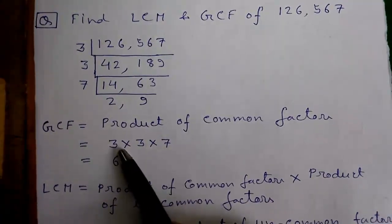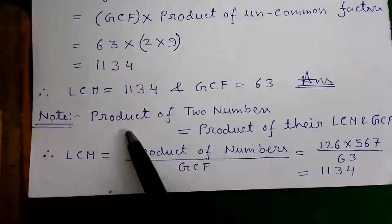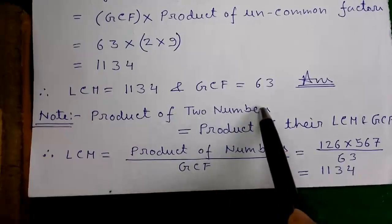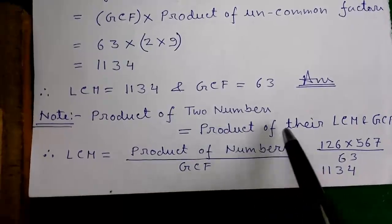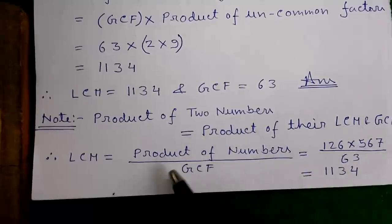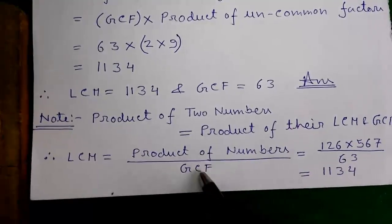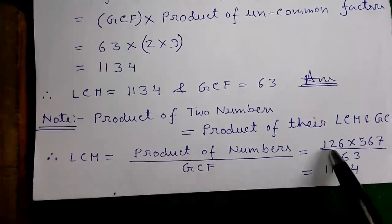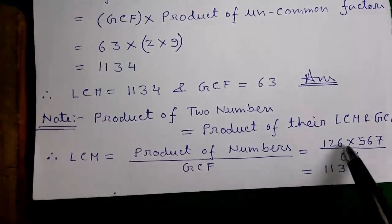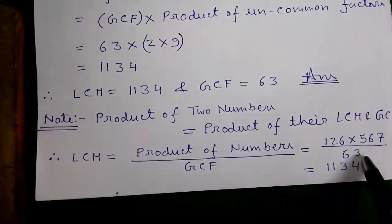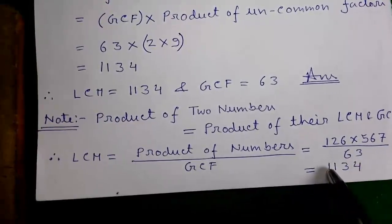So our GCF is equals to 63. And now we will find out the LCM. We know product of two numbers is equals to product of their LCM and GCF. So LCM can be given by product of two numbers divided by their GCF. So that's equals to 126 into 567 by their GCF 63. That's equals to 1134.